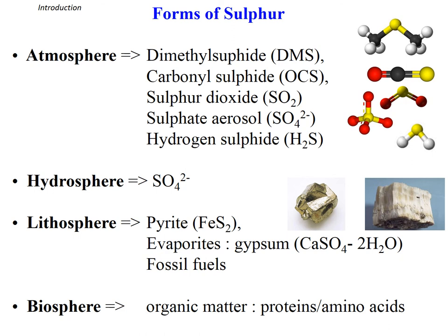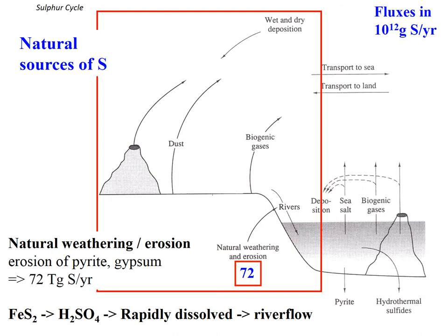Pyrite is the reduced form and oxidizes quite readily at the Earth's surface. You very rarely find pyrite in its nice shiny form — you usually see it as little rusty specks in rocks, because the iron and sulfur are oxidizing, releasing iron oxides and sulfate into the environment. The last reservoir is the biosphere. Sulfur is really important as a constituent of proteins and amino acids, so animals store lots of sulfur.